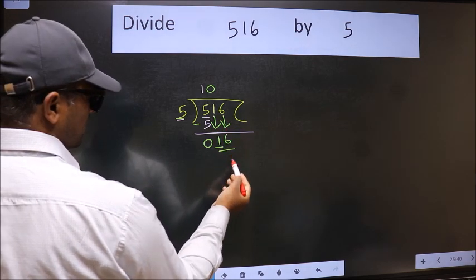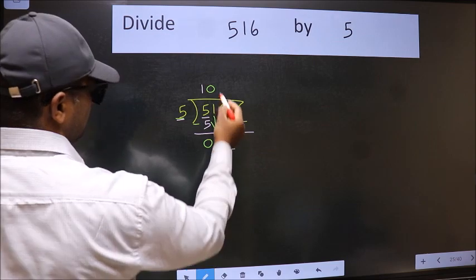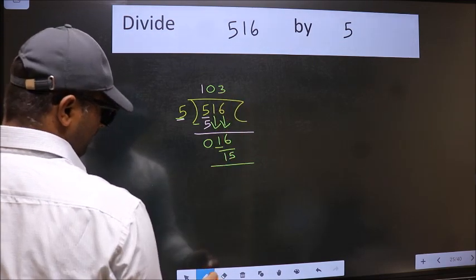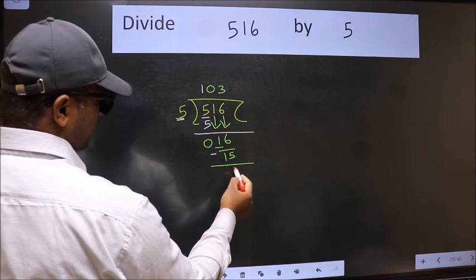Now 16. A number close to 16 in 5 table is 5 times 3 is 15. Now we should subtract. We get 1.